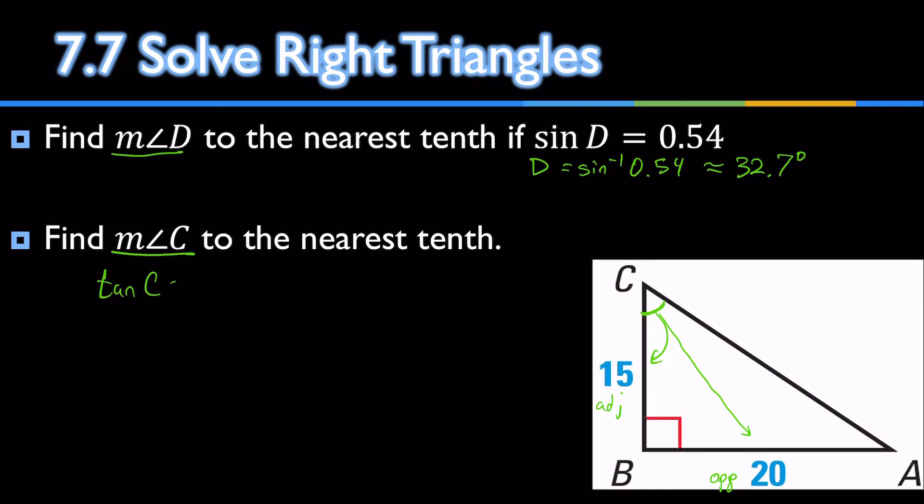Tangent of C is the opposite over the adjacent. So, tangent of C is 20 over 15. To find the angle, we use the inverse tangent. The inverse tangent of 20 over 15 is approximately 53.1 degrees.